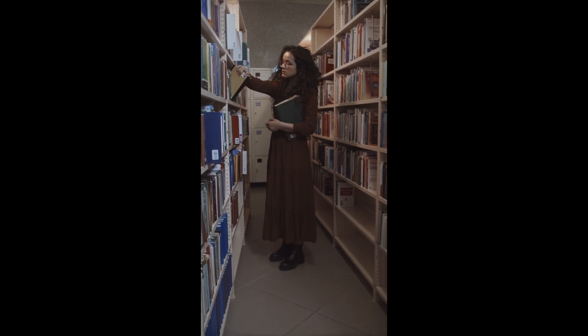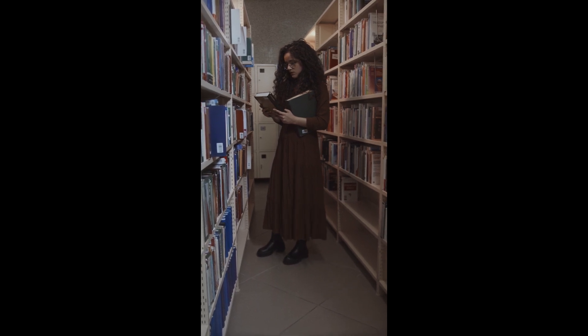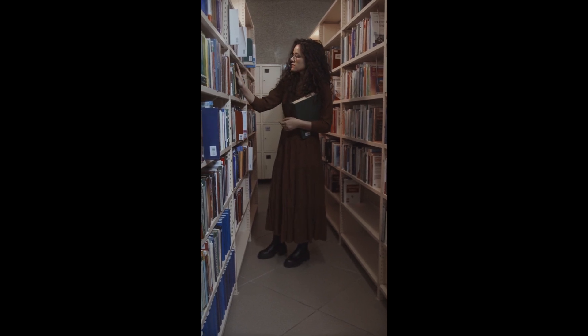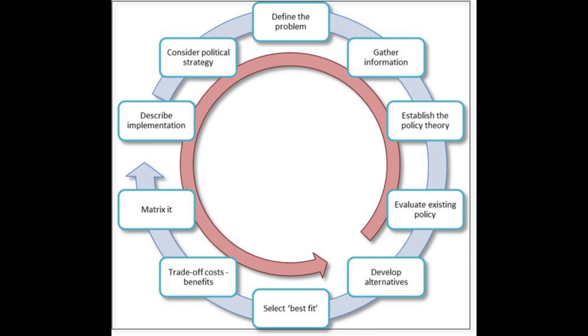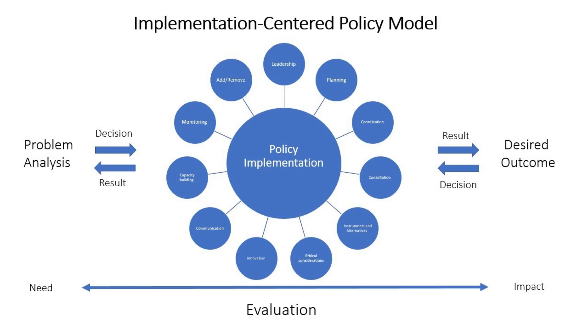Challenges in Educational Policymaking. Despite the structured process, various challenges can complicate educational policymaking. These include political pressures, where political agendas can cloud the objectivity of policy decisions; lack of resources, where insufficient funding can thwart the implementation of even the best-laid policies; resistance to change, as educational institutions historically resist changes, often resulting in pushback from faculty and administration; and equity concerns, as designing policies that address the diverse needs of learners can be daunting, particularly in areas marked by socioeconomic disparities.